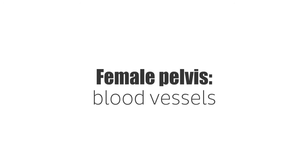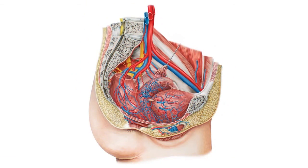Hello everyone, this is Megan from Kenhub and welcome to another anatomy tutorial. In today's tutorial we will be looking at the blood vessels of the female pelvis. Here we can see a lateral view of the pelvis. We can see the blood vessels found in the pelvis and the structures they supply, such as the rectum, the uterus and the urinary bladder.